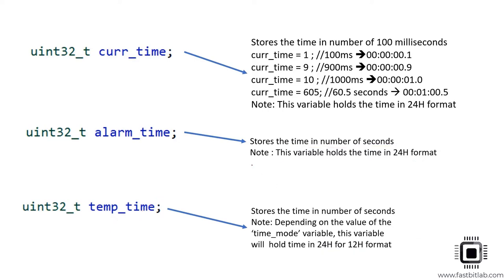If you look at those two variables, they hold time in 24-hour format. When you store time in 24-hour format, you don't need a separate variable for AM or PM, because by decoding the 24-hour value we can determine whether it is AM or PM. That is one advantage of storing time in 24-hour format.